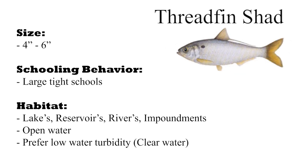The smaller threadfin shad grows to about 4 to 6 inches in length. Threadfin shad are a tight schooling bait fish and most associated with bait balls that you see on your sonar screen. Threadfin shad are found in lakes, reservoirs, rivers, and impoundments — many times occurring naturally and self-sustaining, but sometimes introduced as a forage fish for other predator species. Threadfin shad are often found in clear, open water in the mid to upper levels of the water column.